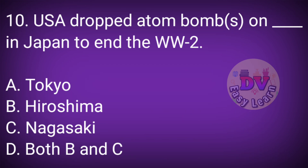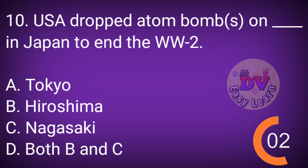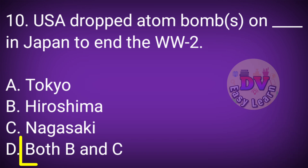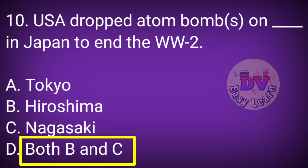Question No. 10: The USA dropped atom bombs on which cities in Japan to end the Second World War? Correct answer: Both B and C — Hiroshima and Nagasaki.